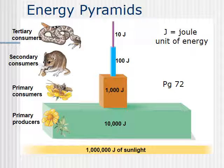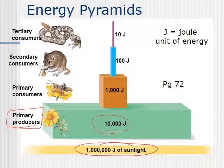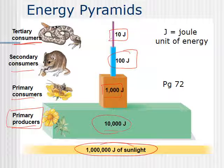Here's another example of an energy pyramid that I like better because it shows sunlight as the starting point. For every million joules of sunlight, you get about 10,000 joules of primary producers — the photosynthesizers — which gives you about 1,000 joules for primary consumers, then about 100 joules for secondary consumers, and only about 10 joules for your top carnivores or tertiary consumers. If you had a quaternary consumer, it would only get 1 joule. Again, you only get about 10% at each level. A joule is simply a unit of energy, just like kilocalories is a measure of energy.